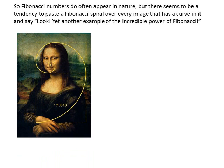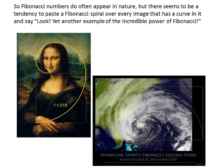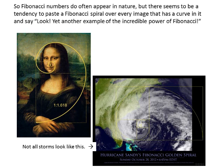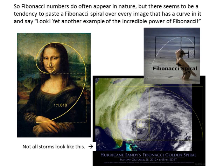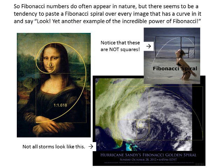Here's the Mona Lisa with the Fibonacci spiral overlaid on it. Here's a picture of Hurricane Sandy — not all storms look like this, but this one has been selected because it does. Here's a young lady throwing water in the air from her hair — and look at that, it's a Fibonacci spiral, except notice that these black images are not squares. I guess it's okay to distort things to make your point.